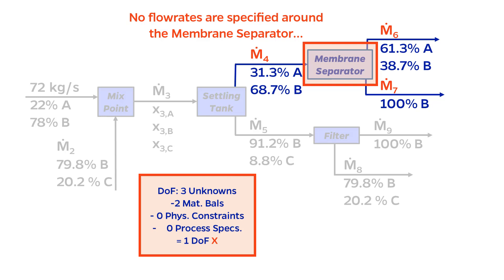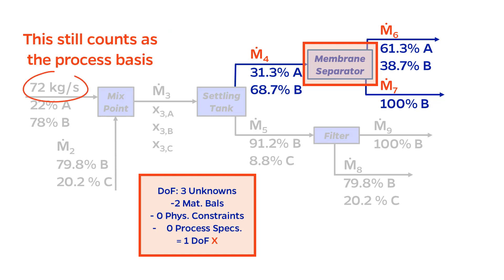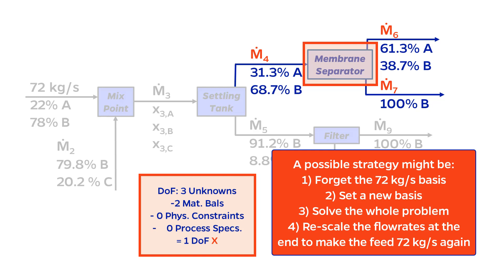And while I'm impressed that you remembered that, the process feed of 72 kilograms per second still counts as the basis here, even though it is momentarily grayed out. What we could do is forget about the given basis of 72 kilograms per second, and then set M4, M6, or M7 as the new basis. This would allow us to start the solve here. At the end of the entire problem, we would have to rescale the flow rates so that the feed goes back to the original 72 kilograms per second. But this is a rather advanced technique, and I won't show that here.